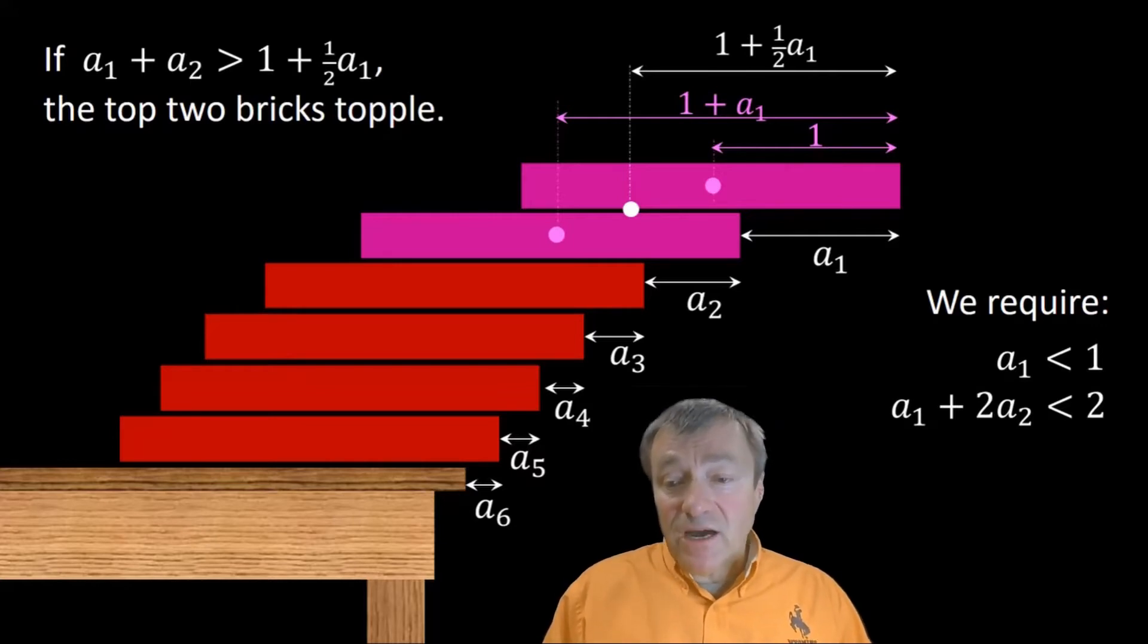On the right side of the screen, I'm going to list my conditions, which together will ensure that the top, in this case the top two bricks, will not fall over. The top brick and then the top two bricks together will not fall over.